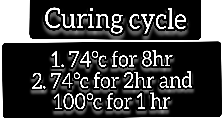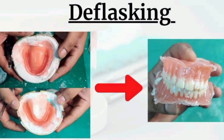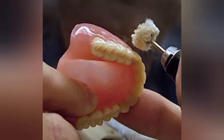After curing, deflasking is done. Deflasking is the act of separating the cast and denture from the flask. One needs to be very careful during deflasking to avoid damage to the denture. It is advised to make cuts through the stone with a saw to separate the dentures and avoid any fracture or warping.